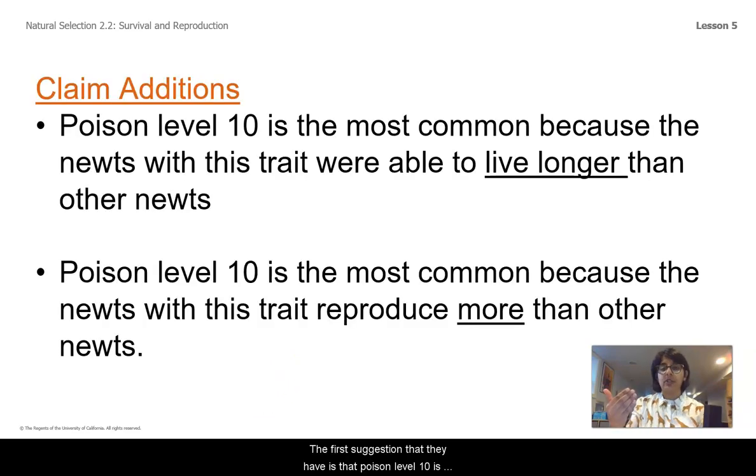The first suggestion that they have is that poison level 10 is the most common in the population because the newts with this trait were able to live longer than other newts. Their next suggestion is that poison level 10 is the most common because the newts with the trait reproduce more than other newts. So let's check this out in our simulation and find out some evidence and data that may support or refute either of these claims.